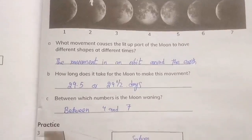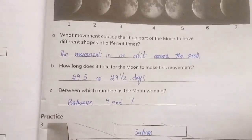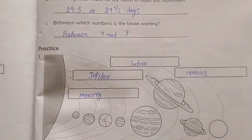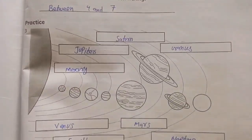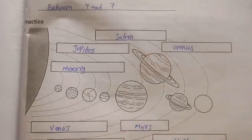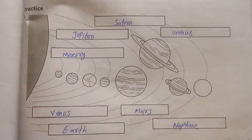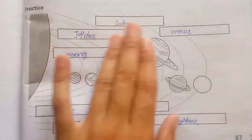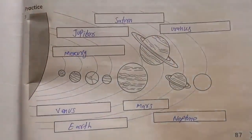Between which numbers is the moon waning? Between 4th and 7th. Now practice question number 3. The diagram is given to you. You have to mark the planets: Mercury, Jupiter, Saturn, Uranus, Neptune, Mars, Earth, and Venus.